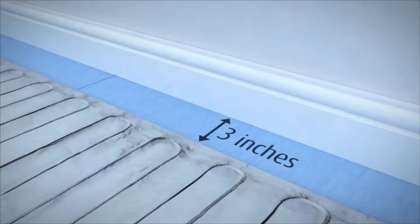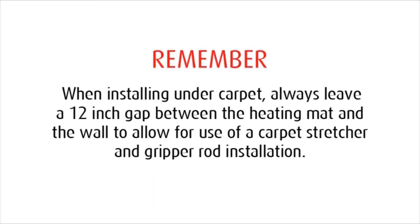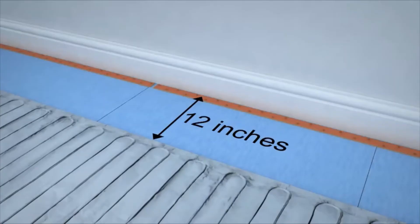In a laminate or floating engineered wood installation, roll down the foil keeping a minimum of a three inch gap along the walls. When installing under carpet, always leave a 12 inch gap between the heating mat and the wall to allow the use of a carpet stretcher and gripper rod installation.